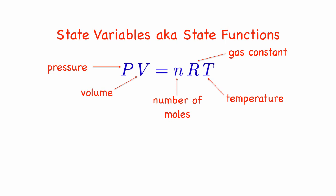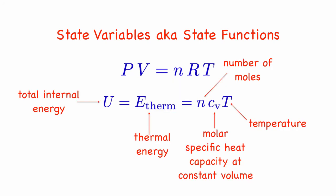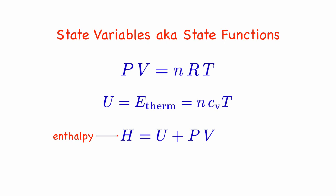They do not depend on how we got to that state. This is very different from heat and work, because they do depend on the particular path we follow to go from one state to another. Now that we know about heat capacity, we know another state variable for an ideal gas, the internal energy, since we can calculate it from the number of moles and the temperature. If we combine state variables, then we can get additional state variables like enthalpy. It turns out that entropy is also a state variable.